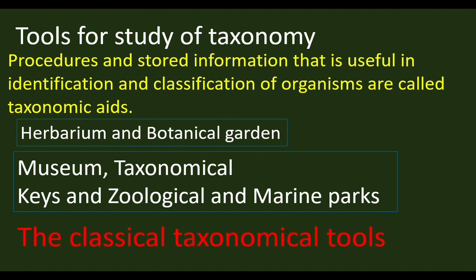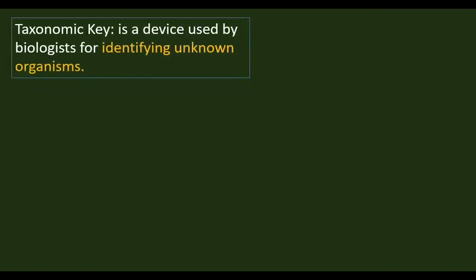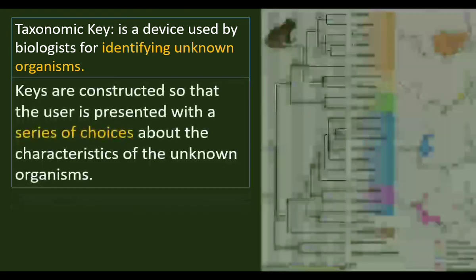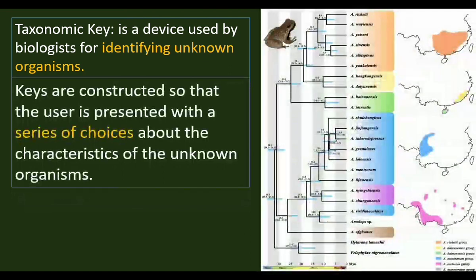These are traditional tools. First, let us see the classical taxonomic tools one by one. Taxonomic key is a traditional tool used by biologists for identifying an unknown organism. A key is constructed for the purpose of identifying organisms. The key provides a series of choices. Look at this picture.